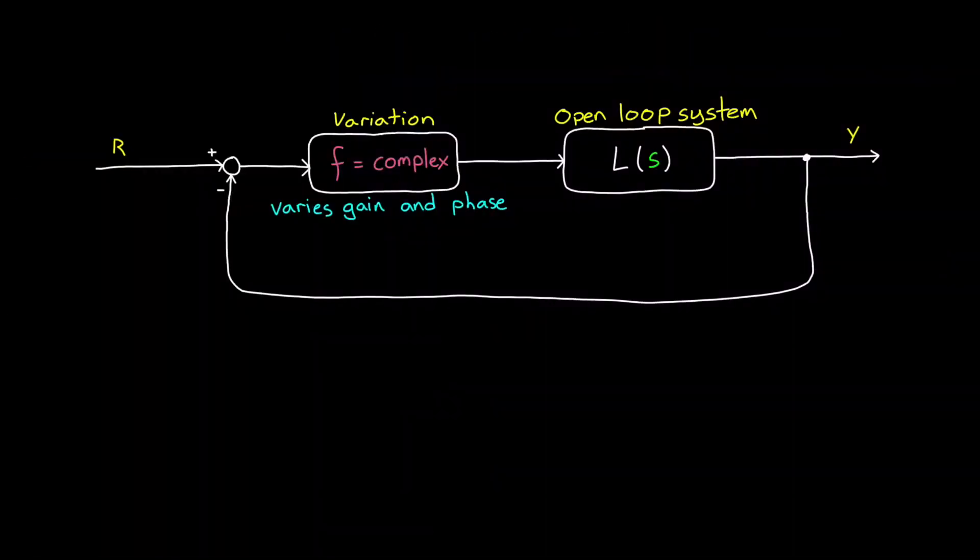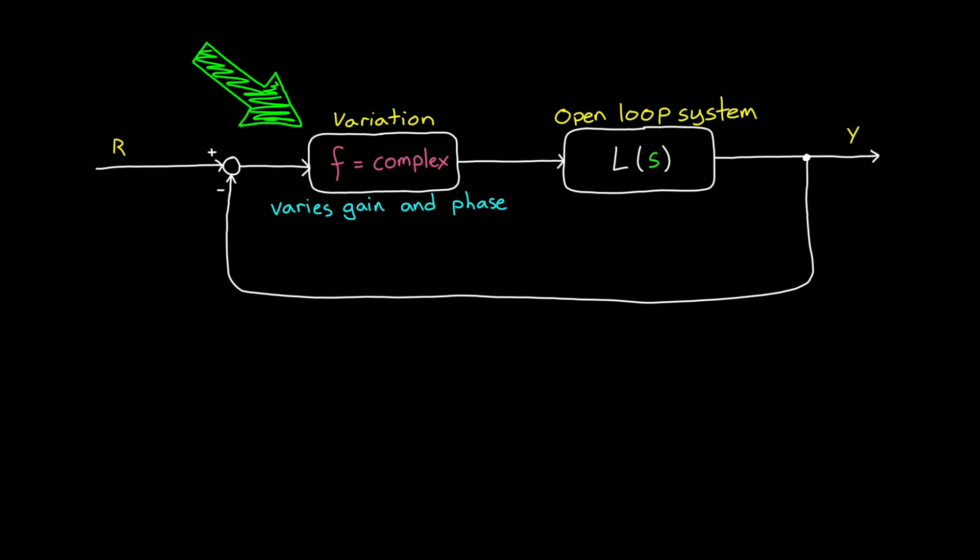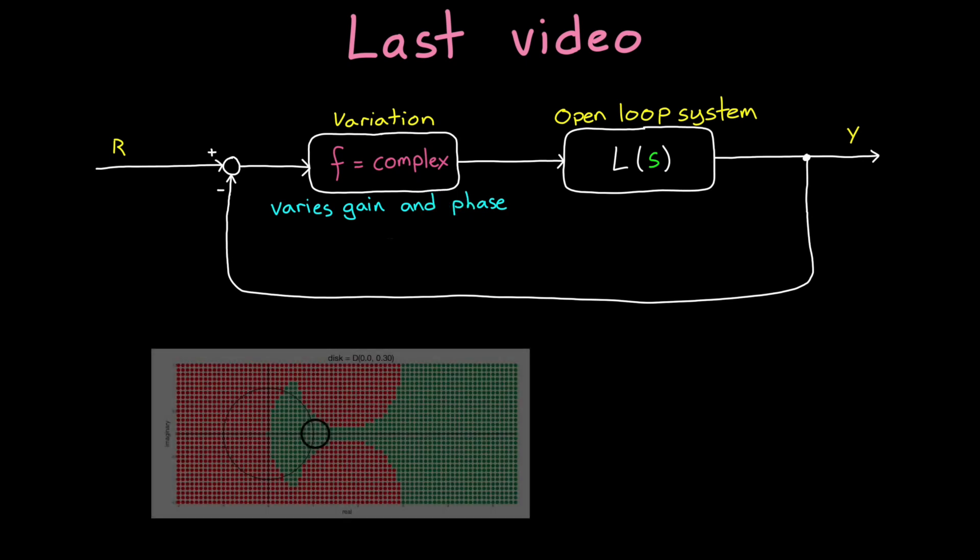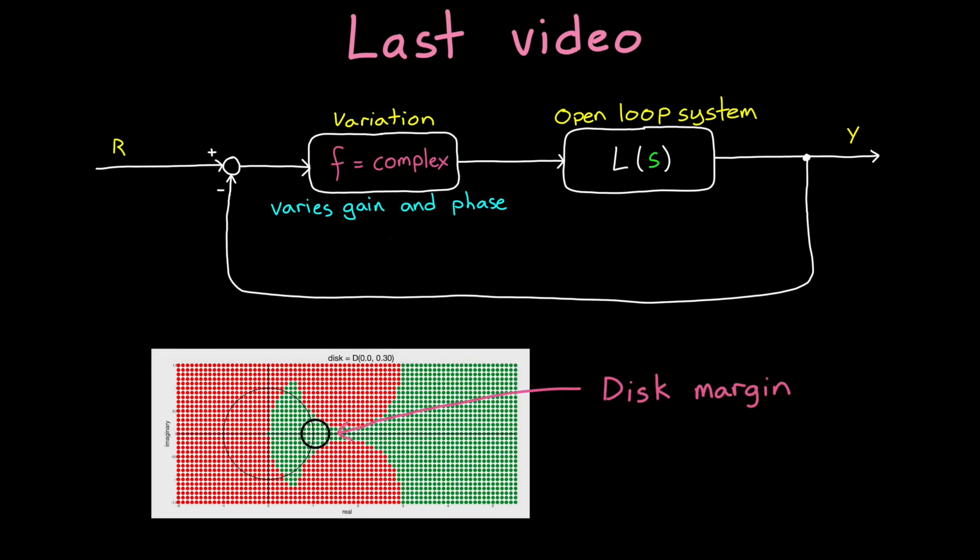We can assess how robust our system is by subjecting the open-loop system to some variation and checking to see how it performs. Remember, this is exactly what we did in the last video when we injected variation in the form of a complex number that is multiplied with the open-loop system. And we said that disk margin was the largest disk in the complex plane that only includes stable variations.